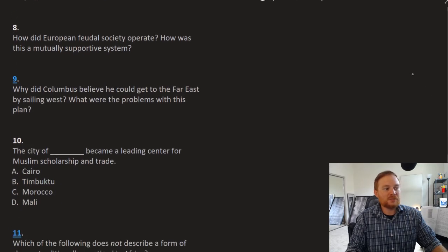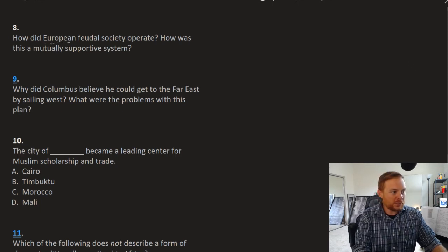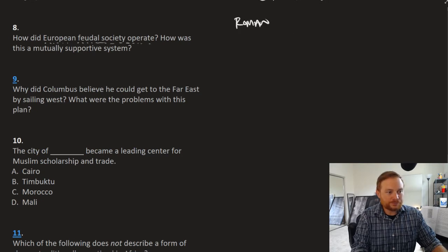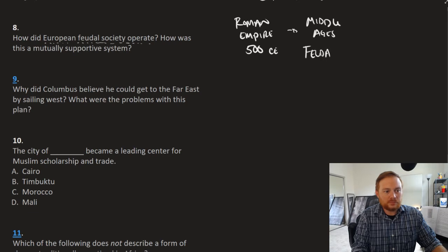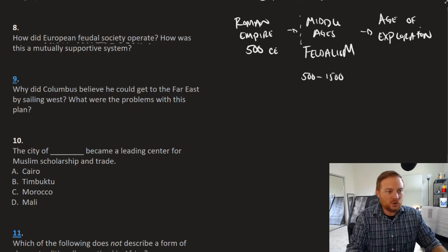Question number eight, how did European feudal society operate? How was this a mutually supportive system? So when we think about European feudal society, in terms of chronological order, we can think Roman Empire. That ended roughly 500 CE. Then you had the Middle Ages. This was when feudalism thrived. This is roughly 500 to 1500. And then that gives way to the age of exploration, pretty much where our class begins. And of course, that's with Columbus's discovery of the new world. So we're focusing on what was European society like in the 1000 years living up to this.